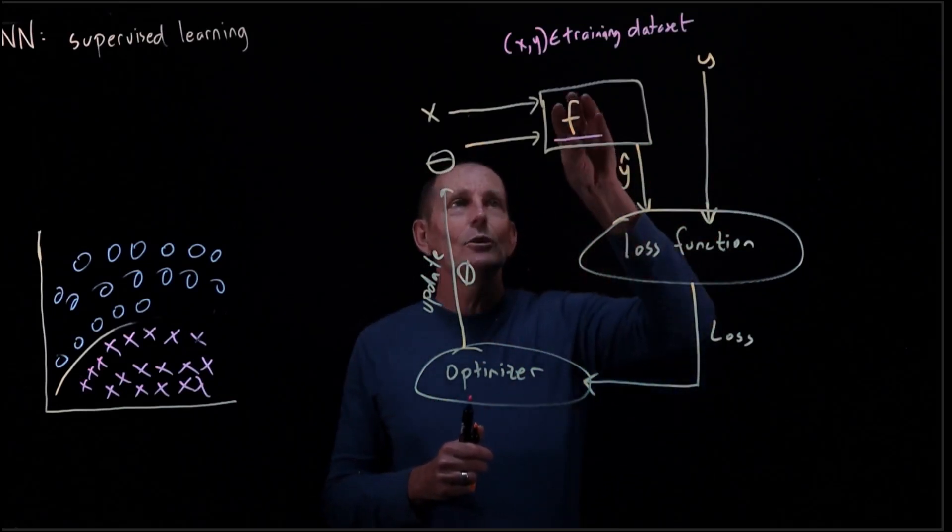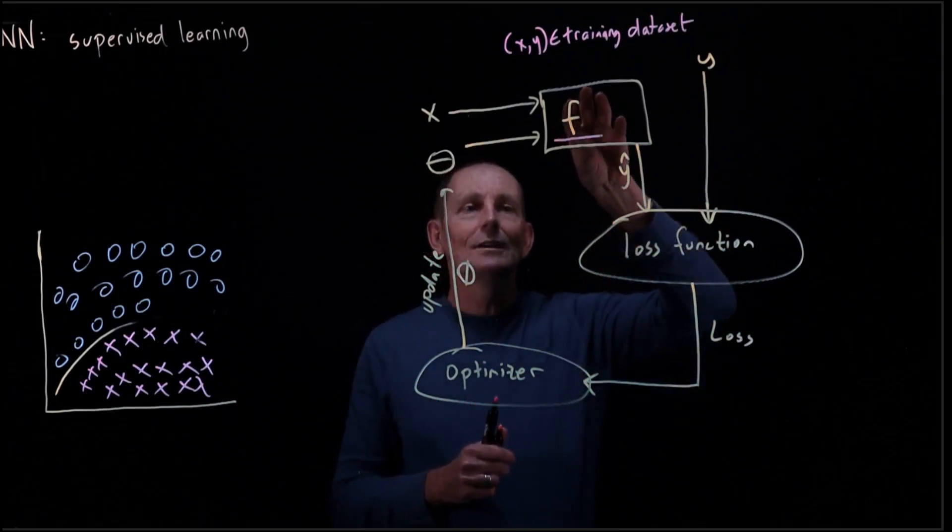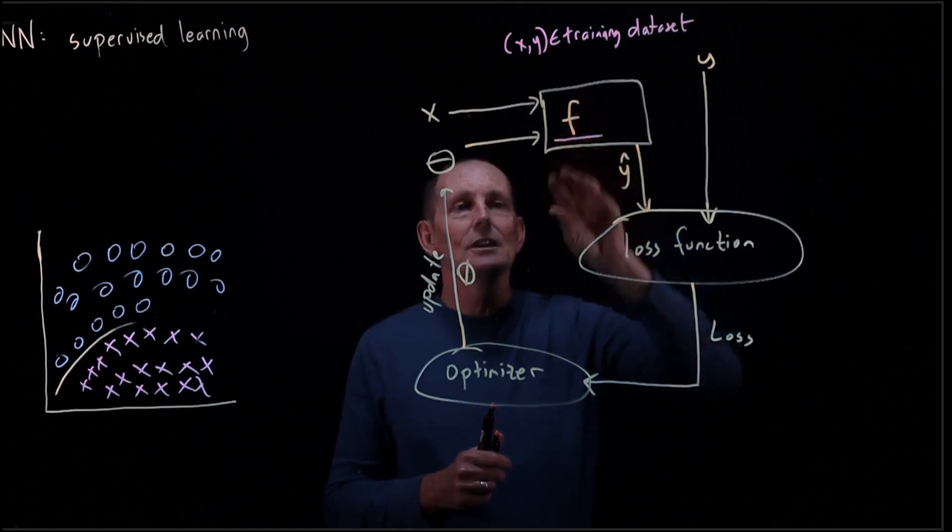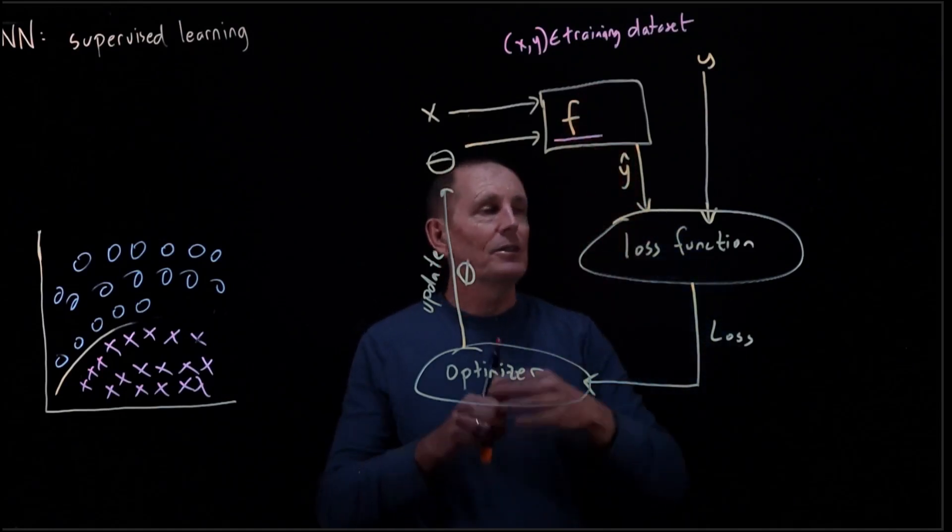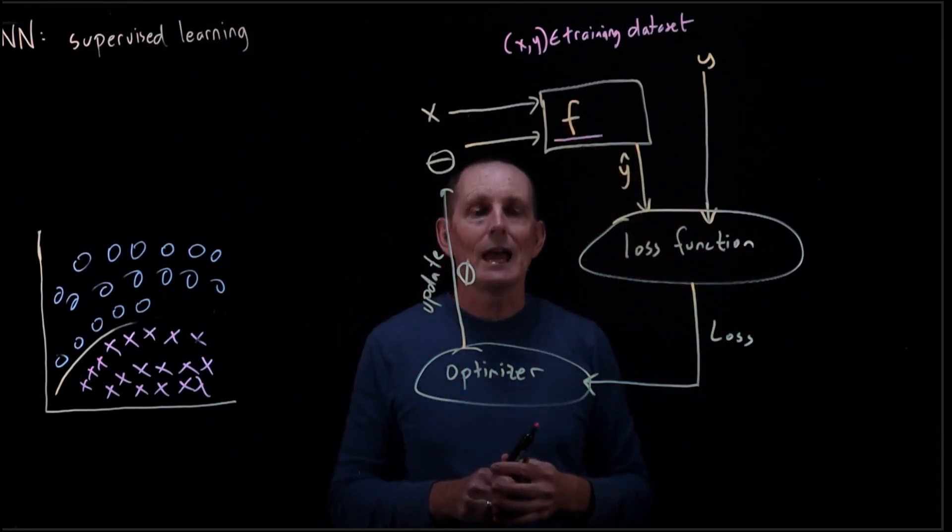And then once we do that, we'll go ahead and switch from using simple functions like polynomials and actually use neural networks. But the rest of the machinery is just going to kind of work as is.